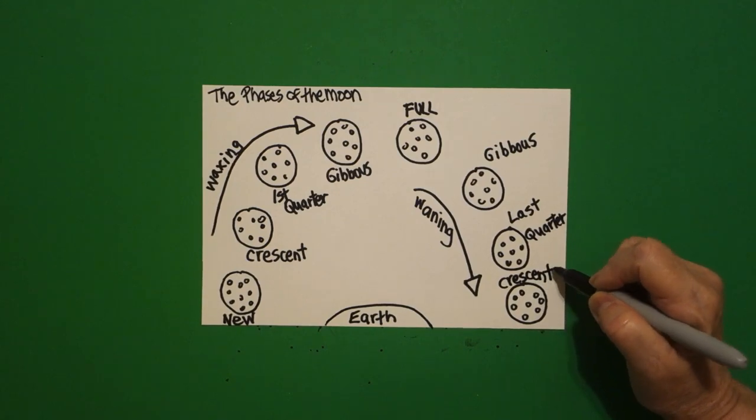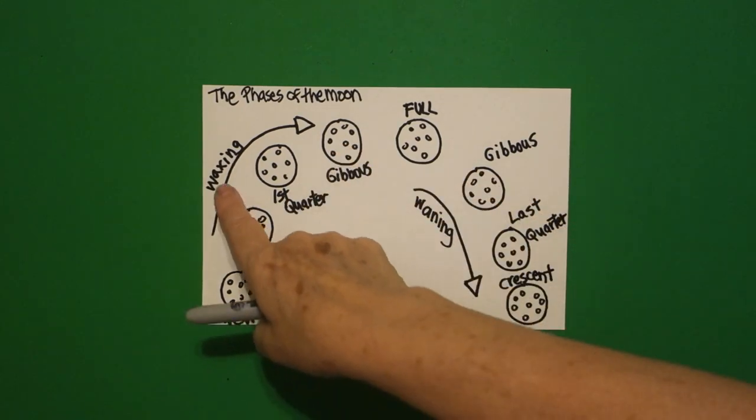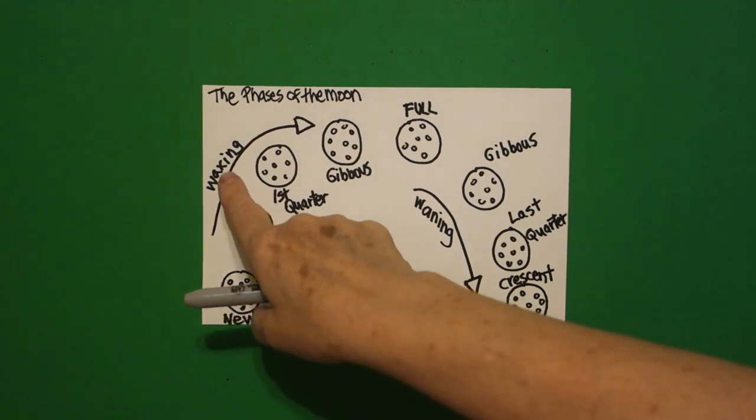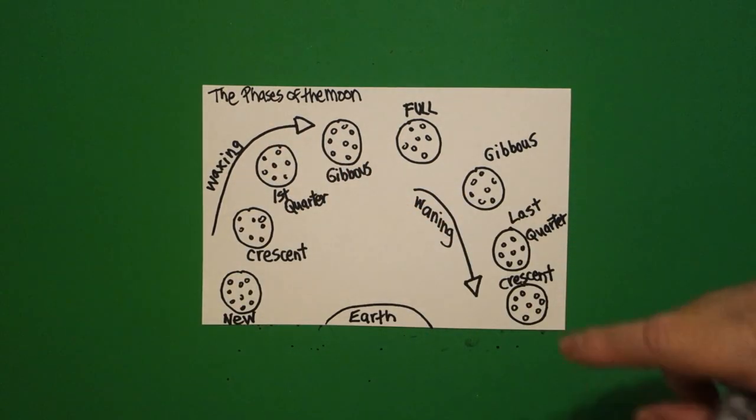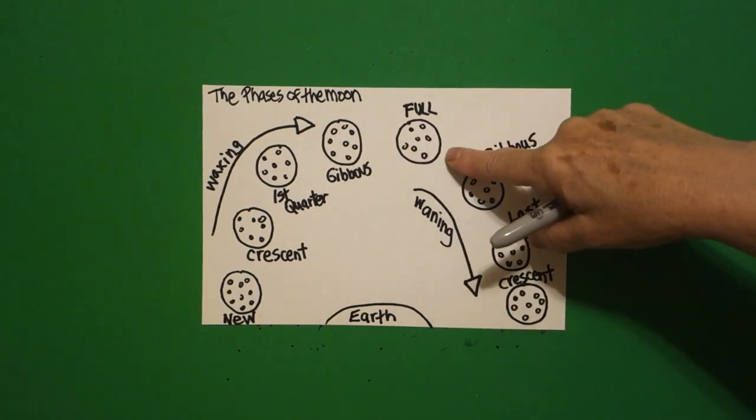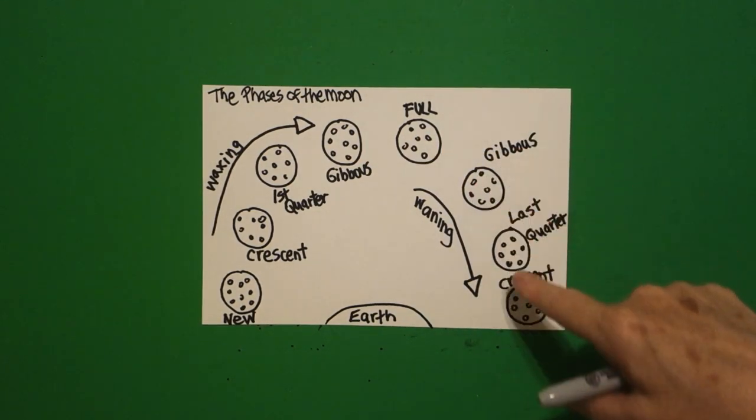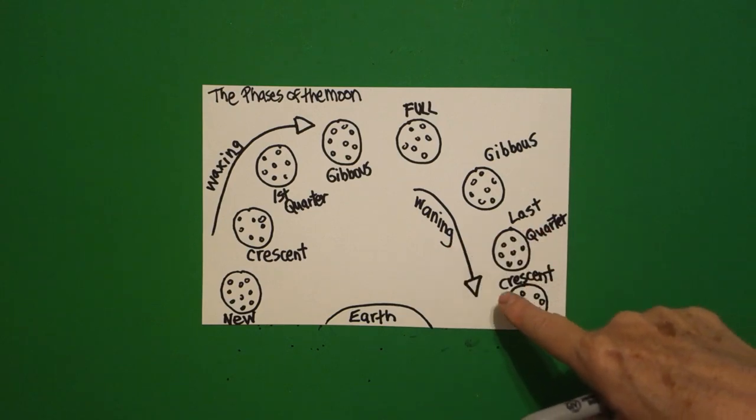When you talk about these phases going up, you would say the waxing crescent, the waxing first quarter, the waxing gibbous. Then you hit the full. Coming down, you're hitting the waning gibbous, the waning last quarter, and the waning crescent.